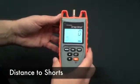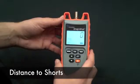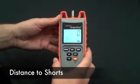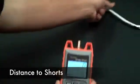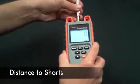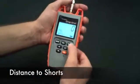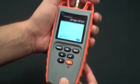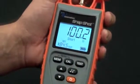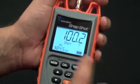Not only does the Snapshot determine length to opens or breaks, it can determine length to shorts. Here's an example of that. We'll take some RG6. Plug it into the unit. Hit the test button. 100.2 feet to a short.